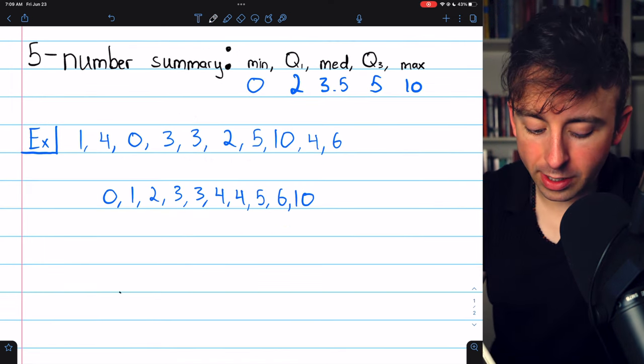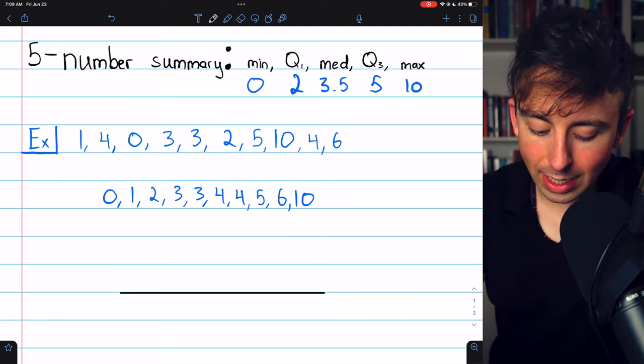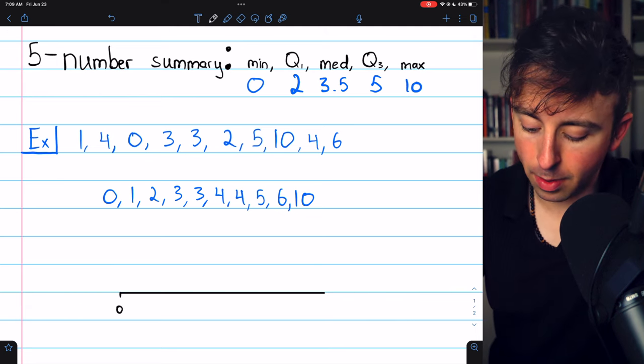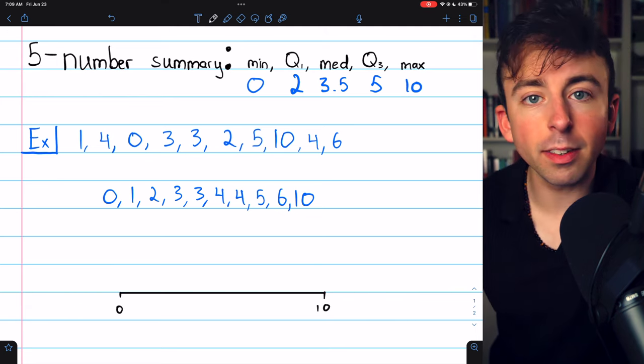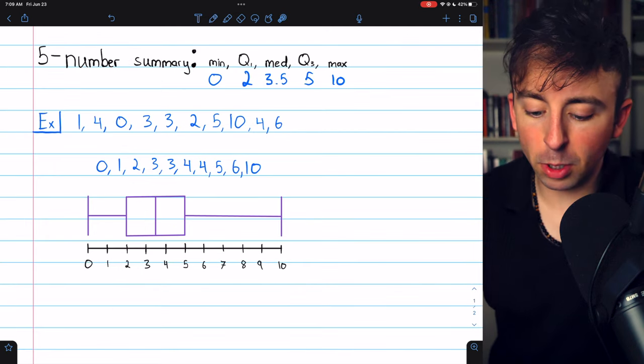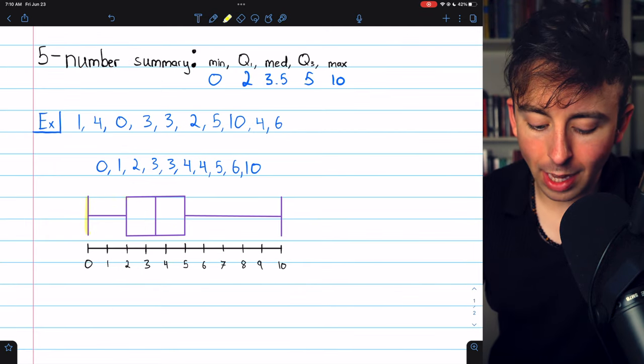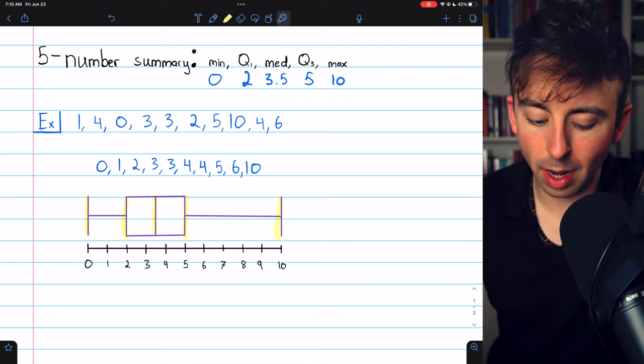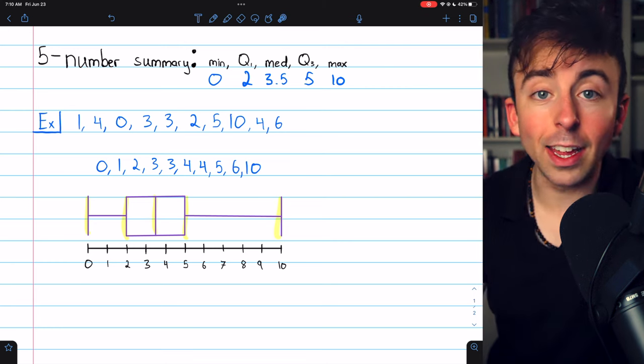To use the five-number summary to construct a box plot, we need a number line that goes from our minimum, 0, to our maximum, 10. There's our number line. Then we just draw vertical lines for all the numbers in the five-number summary: the minimum, the maximum, and the quartiles and median.